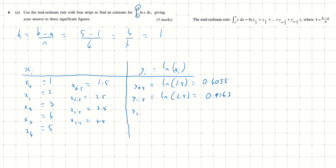Similarly, y2.5 = ln(3.5) = 1.2528, and y3.5 = ln(4.5) = 1.5041.